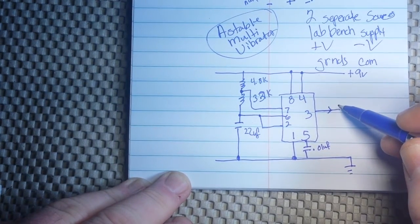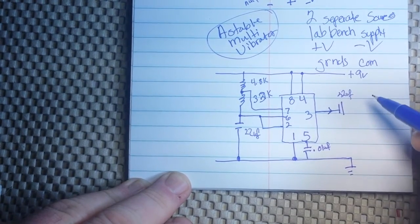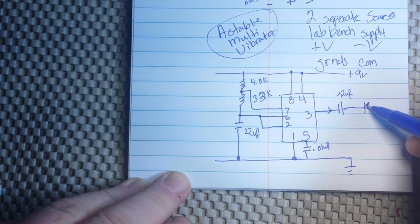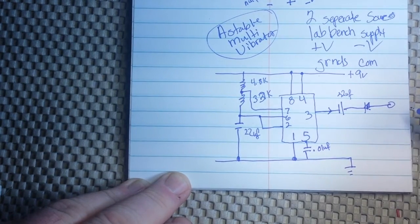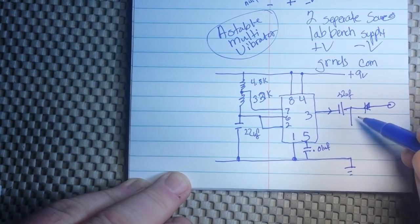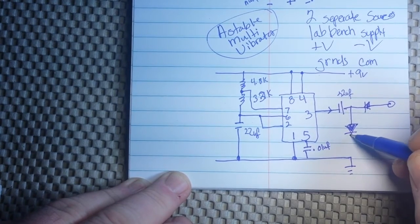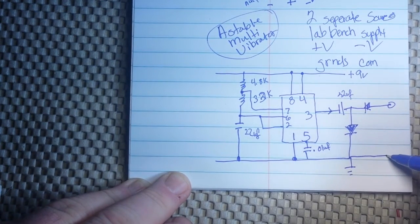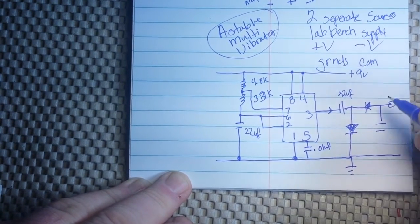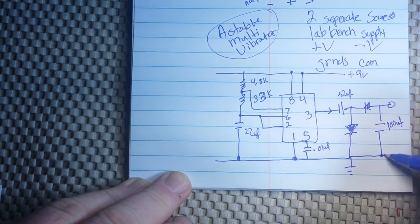And now we take our output from pin three. And what we're going to do is we're going to pass it through another 22 microfarad capacitor. And a diode here. And a diode here. But we're going to need one more diode right here. Going to ground. We're going to extend our ground plane out here like this. And one more capacitor right here. And this one's going to be 100 microfarads. Down to ground.